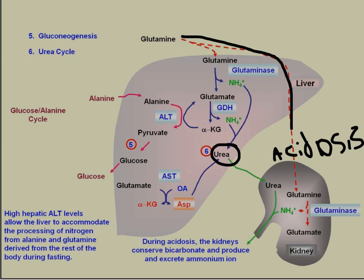If glutamine goes into the liver, glutaminase is going to release a nitrogen forming glutamate. That nitrogen will be a participant in the urea cycle. The other nitrogen will usually come from aspartate, which is formed when glutamate comes down and participates in the aspartate reaction — forming aspartate via AST. Oxaloacetate and glutamate can form alpha-ketoglutarate and aspartate by a transamination reaction. That's where the second nitrogen comes from for the urea cycle.